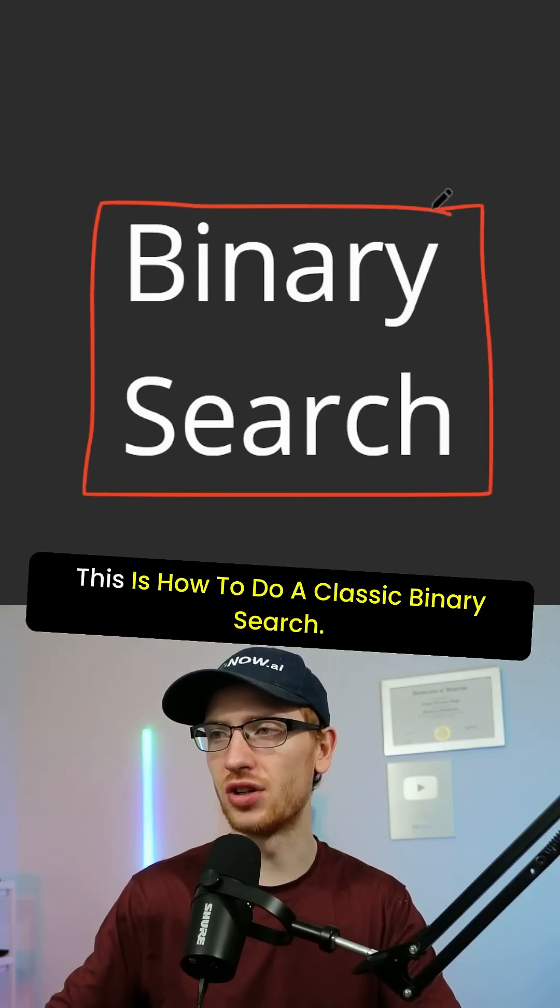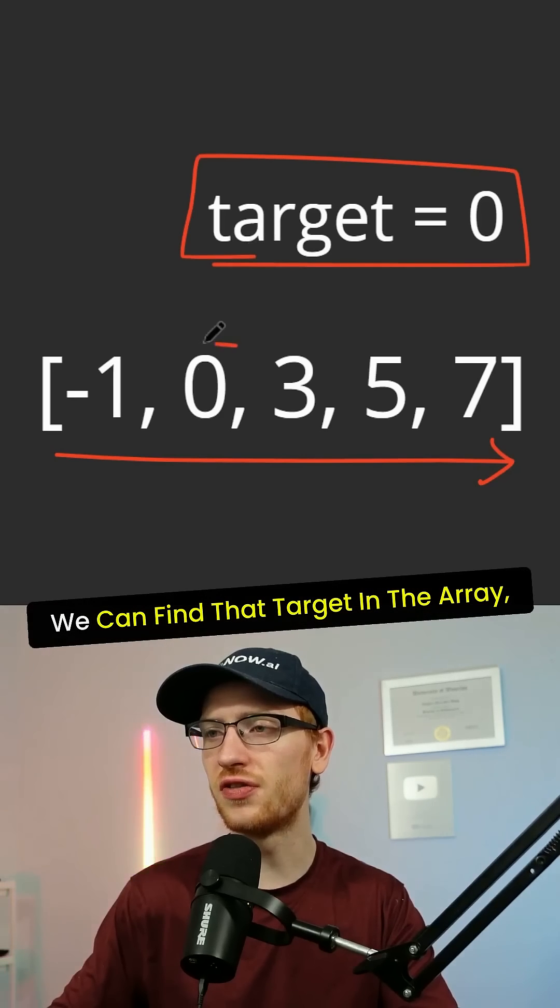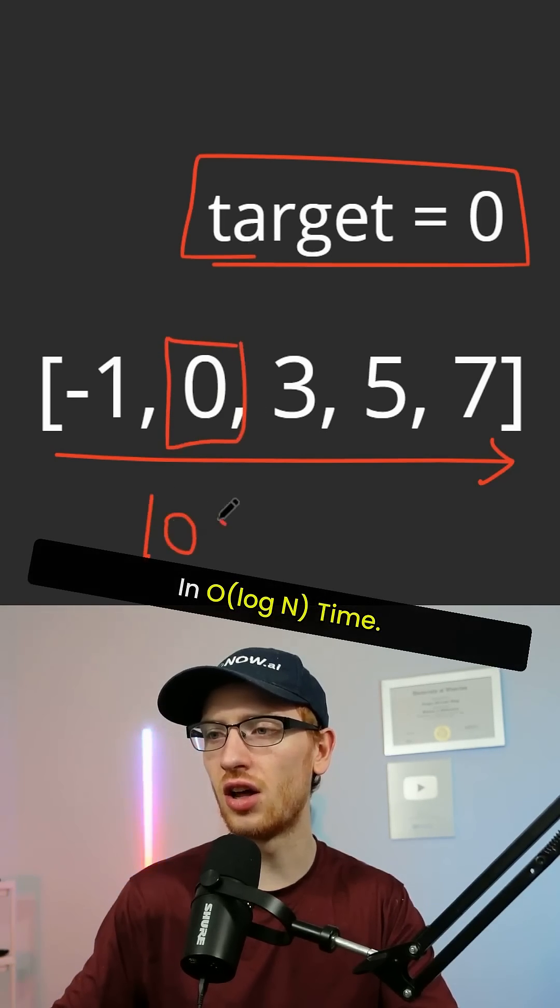This is how to do a classic binary search. Given a sorted list of numbers and a target to search for, we can find that target in the array in log n time.